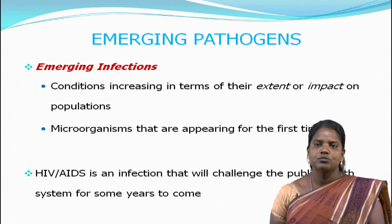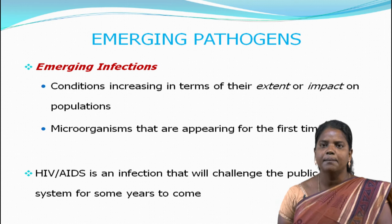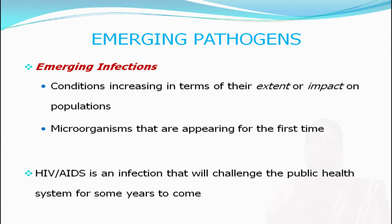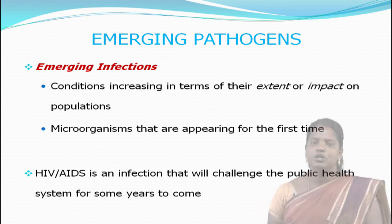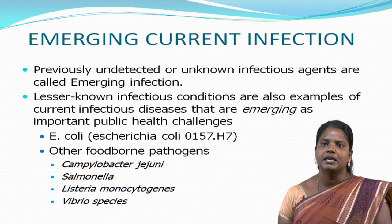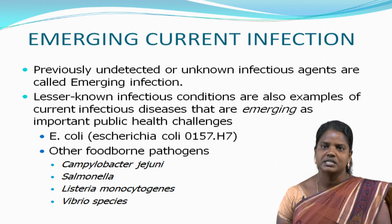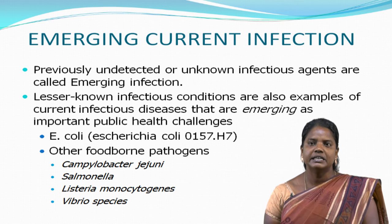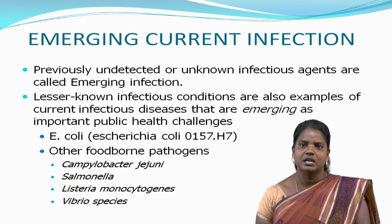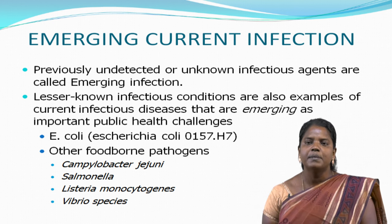Emerging pathogens are mainly associated with foodborne illnesses. Emerging infections are conditions increasing in their extent or impact on human populations, including microorganisms appearing for the first time — such as bacteria, viruses, protozoans, nematodes, and Escherichia coli — as well as HIV/AIDS, which will challenge public health systems for years to come. Previously undetected or unknown infectious agents are called emerging infections, and lesser-known infectious conditions are also emerging as important public health challenges.